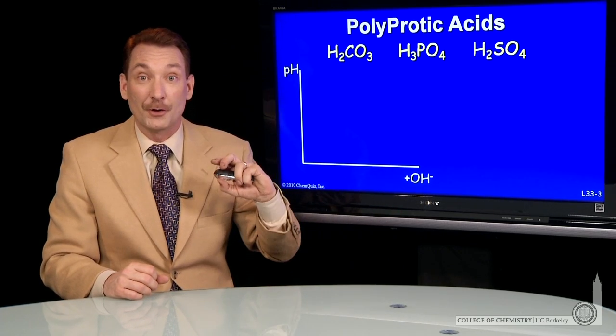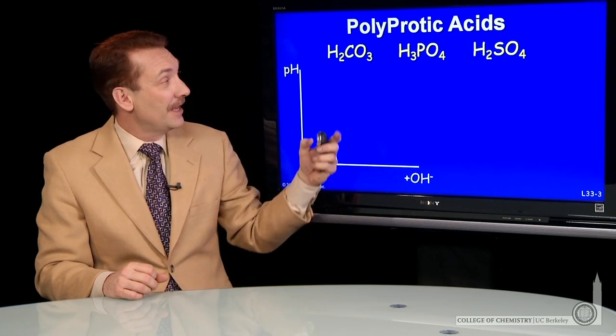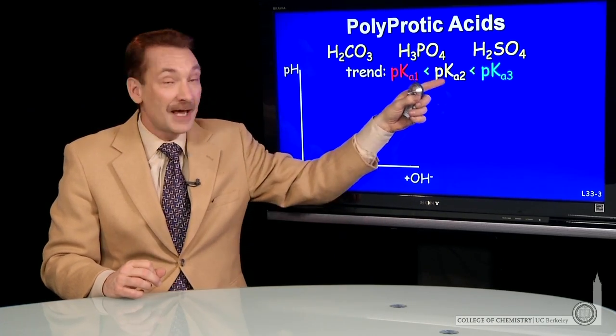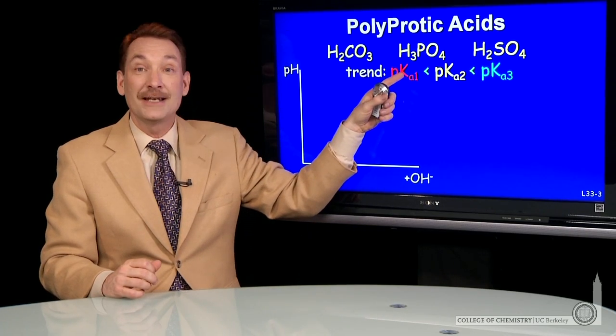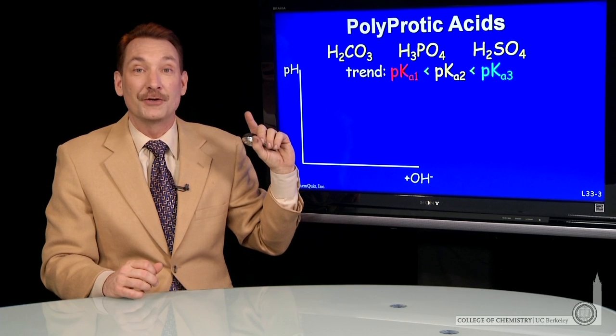When you titrate a polyprotic acid, in general, the protons come off stepwise. Another way to say that is the pKa's are often separated by many units, so you'll have an independent equilibrium for each of the acidic protons.